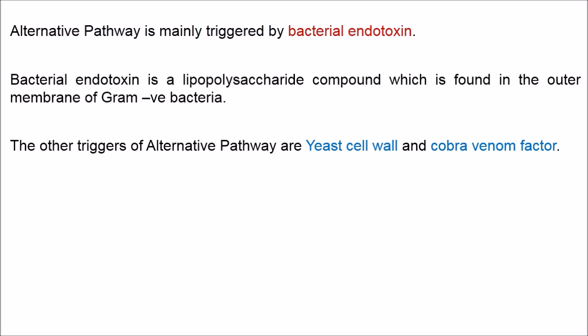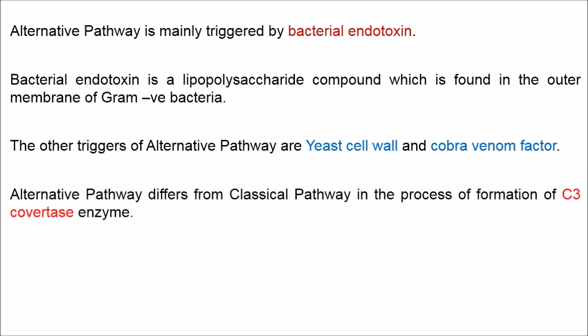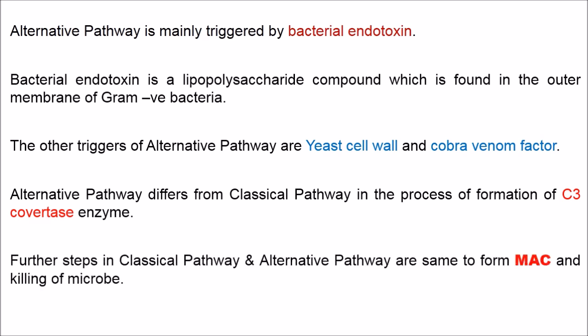The other triggers of alternative pathway are yeast cell wall and cobra venom factor. Alternative pathway differs from classical pathway in the process of formation of C3 convertase enzyme. Further steps in classical pathway and alternative pathway are the same to form membrane attack complex and killing of microbe cells.